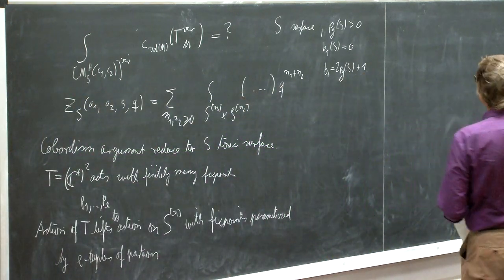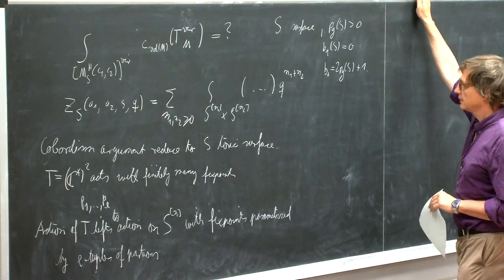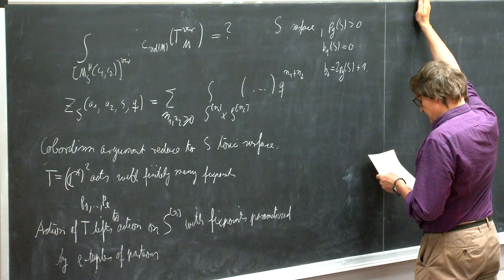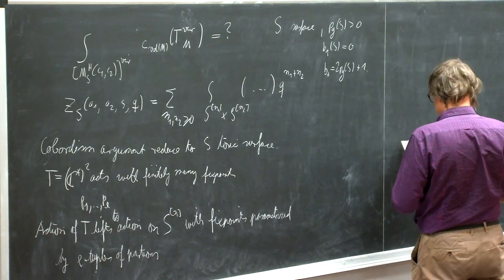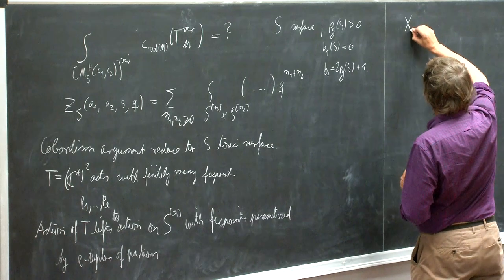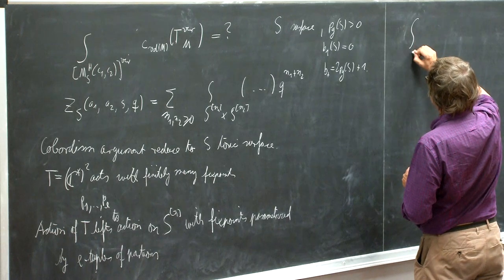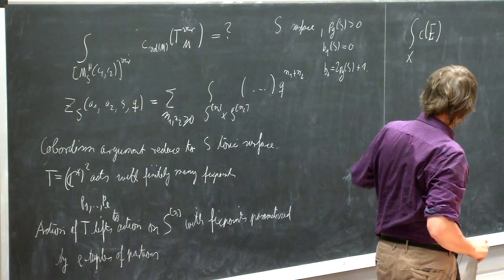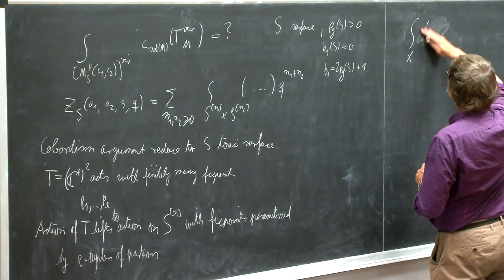And then we wanted to apply the Bott residue formula. And today it was also mentioned in Pavel's talk, the Bott localization, which is more or less the same but allowing also for the equivariant setting. So let me just write it. So if X has an equivariant vector bundle on X, and we want to compute something like the integral over the Chern classes, some expression in the Chern classes of it.